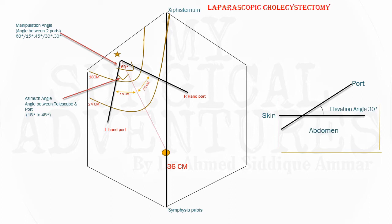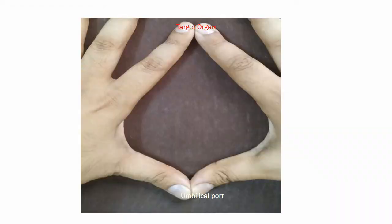There is an important point in the left upper quadrant called Palmer's point, located 3 centimeters below the left costal margin. If a patient has had previous midline surgery, a midline incision, or a previous laparotomy, and you cannot safely place the telescope at the umbilical position due to adhesions, you can place the telescope at Palmer's point instead. From this position, surgery on the right side and pelvis can be performed with ease.